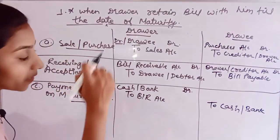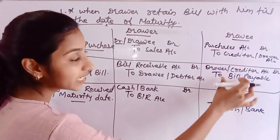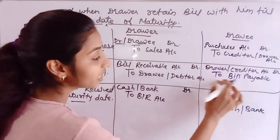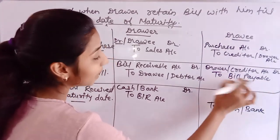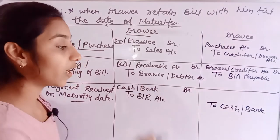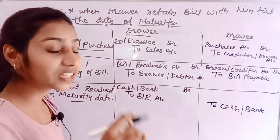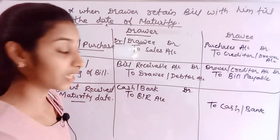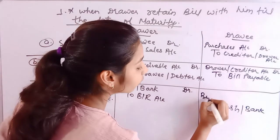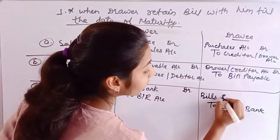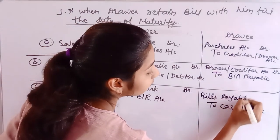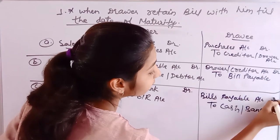What is debited? Bills Payable. Because this is the liability you created in bills payable — now you have to finish it. When the liability is finished we show it in debit. So: Bills Payable Account Debit to Cash or Bank Account.